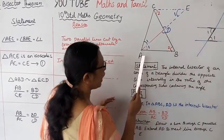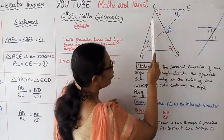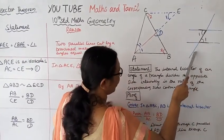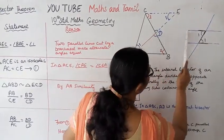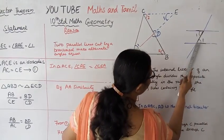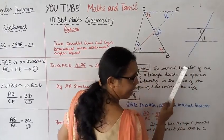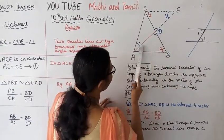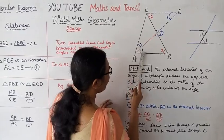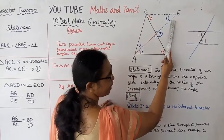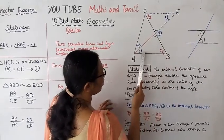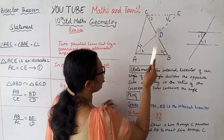Two parallel lines AB and CG are cut by a transversal. Alternate angles are equal. Two parallel lines cut by a transversal — alternate angles are equal. If you look at this diagram, this is the same.